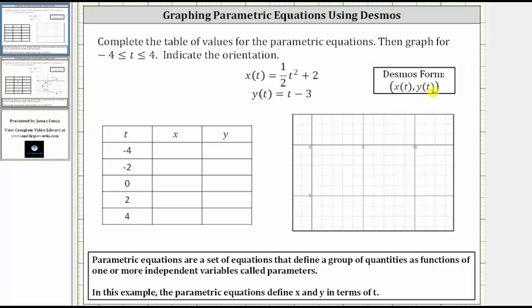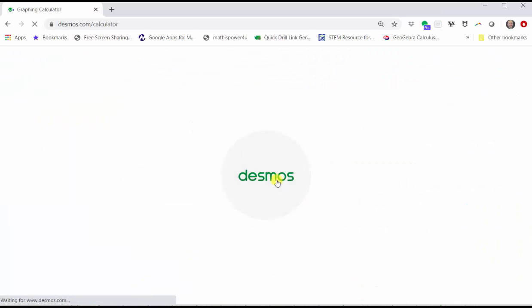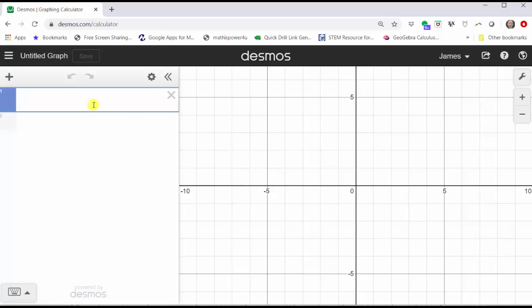Let's go to desmos.com and click graphing calculator. And now let's enter the parametric equations, which can be entered from the computer keypad or the Desmos keypad. I will use the Desmos keypad so you can see what I'm entering. In the lower left-hand corner, click show keypad.